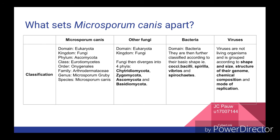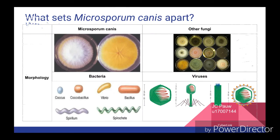Bacteria belong to the domain Bacteria and are further classified according to their shape — Cocci, Bacilli, Spirilla, Vibrios and Spirochaetes. Viruses are not classified as living organisms and are grouped according to shape and size, structure of their genome, chemical composition and mode of replication. When looking at the morphology of Microsporum canis, they form unique colonies. The colonies are flat, spreading, white to cream colored with a dense cottony surface which may show some radial grooves. The reverse side of the colonies are usually a bright golden yellow to brownish yellow, but some non-pigmented strains may also occur.